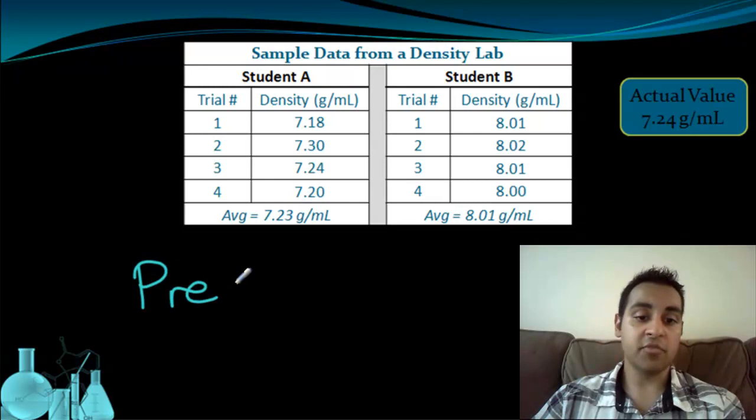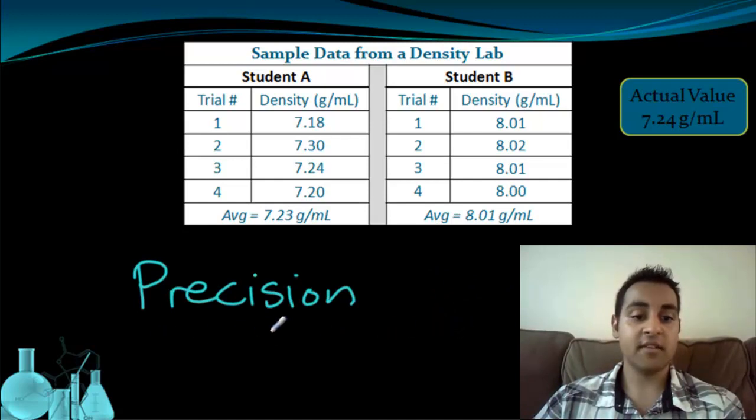The next thing we can talk about is precision. Now some people use these two words interchangeably, but they have very different meanings for our purposes in the lab. In science, accuracy and precision mean two different things.